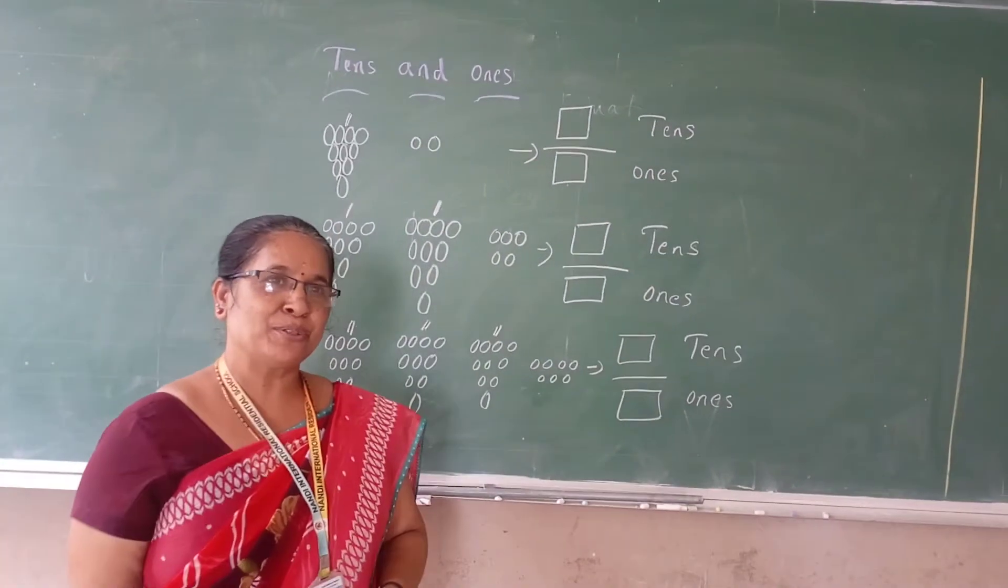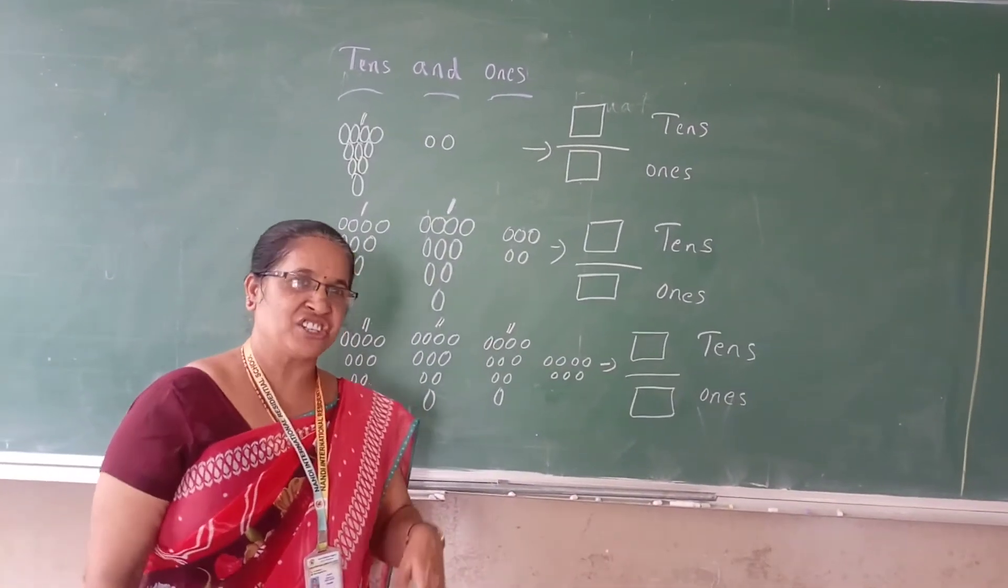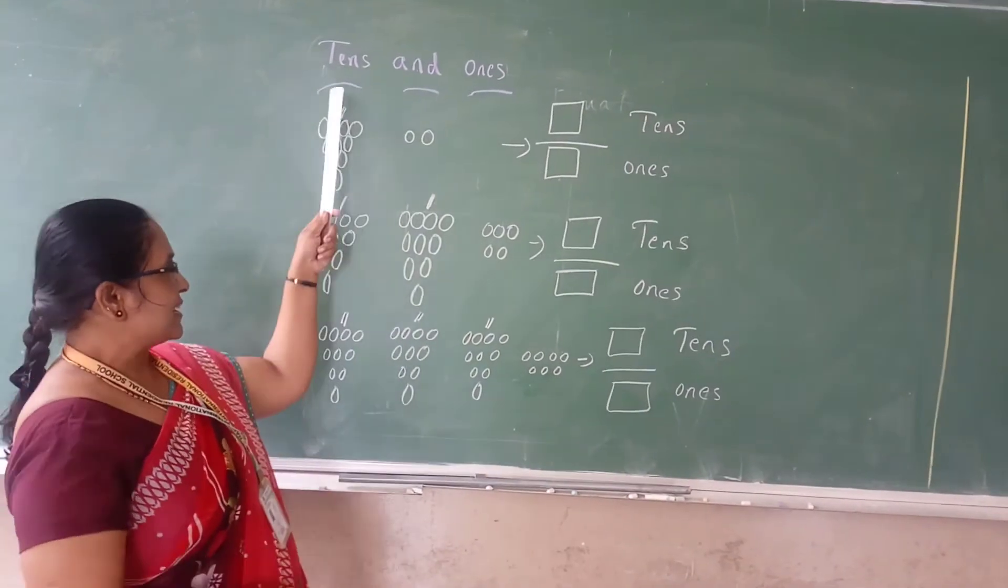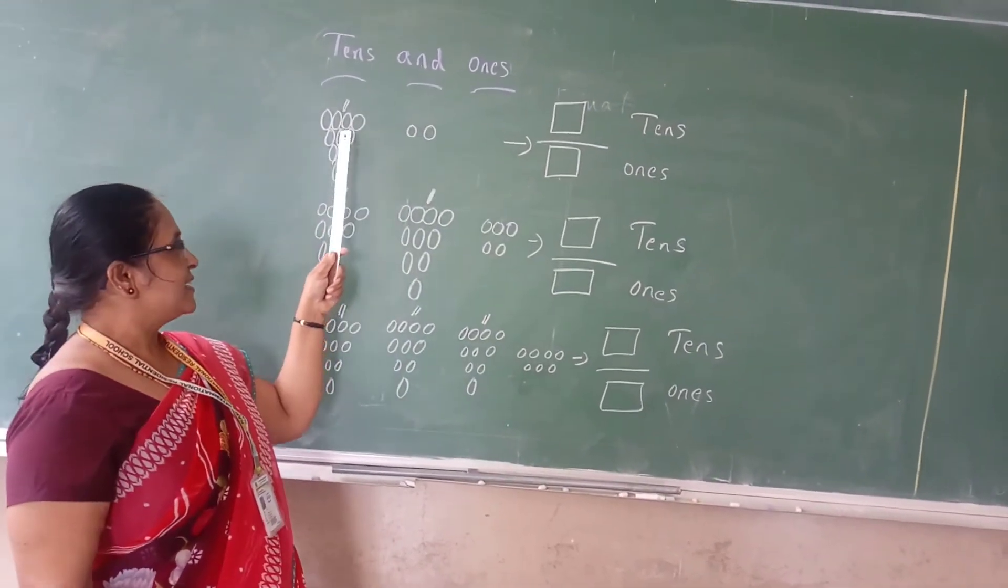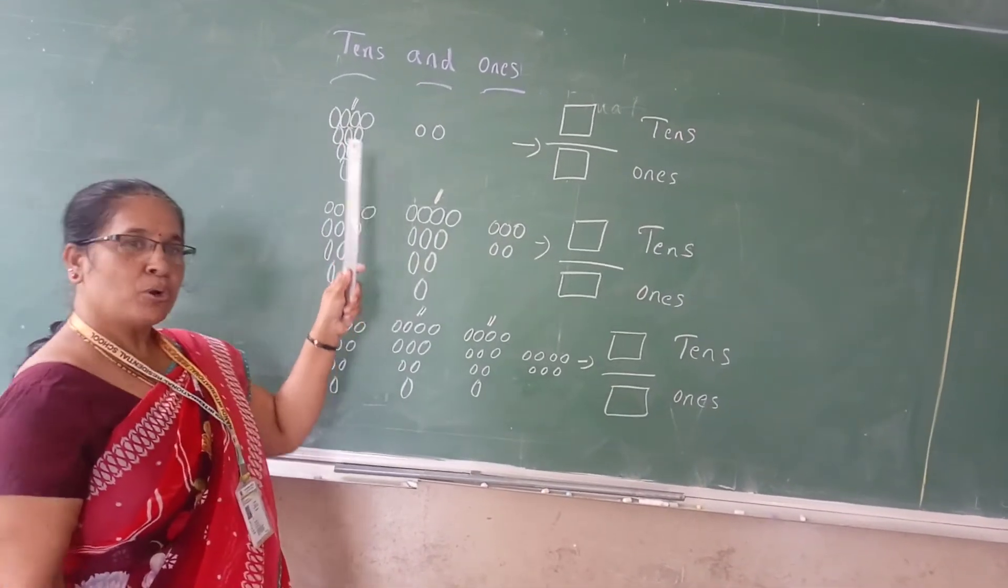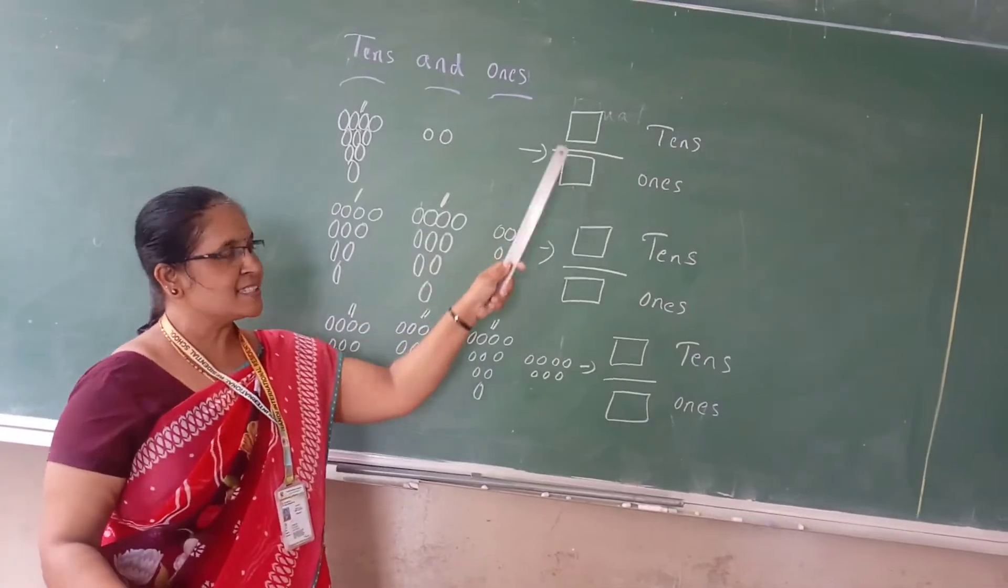Hi, good morning children. Welcome to the online class for the UKG children. See here, tens and ones. What is this? Tens and ones. See here, these here some rods are neatly arranged. Just you go on counting and tell the tens and ones.